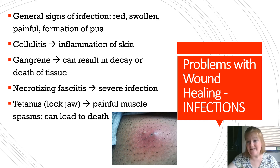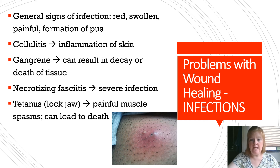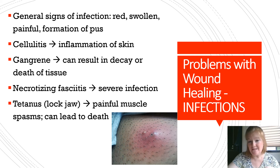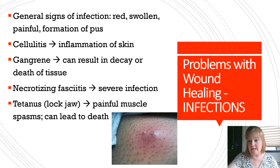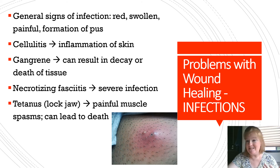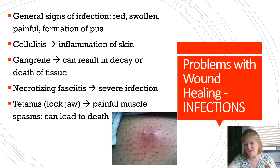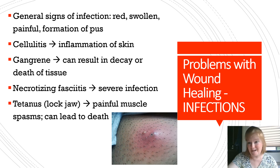Tetanus, also called lockjaw, results in painful muscle spasms and can eventually lead to death. There is a vaccine against tetanus — it's recommended every 10 years. There may be some soreness at the injection site for a few days, but it's better than dying.